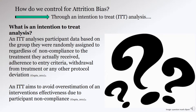We can control for attrition bias through what is known as an intention-to-treat analysis. An intention-to-treat analysis analyzes participant data based on the group they were randomly assigned to, regardless of non-compliance, adherence to entry criteria, withdrawal from treatment, or any other protocol deviation. An intention-to-treat aims to avoid overestimation of an intervention's effectiveness due to participant non-compliance.